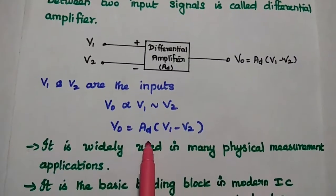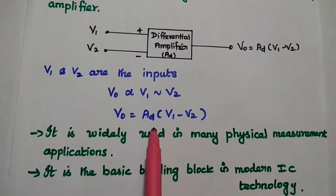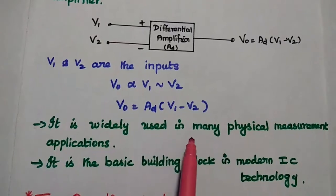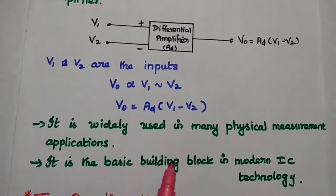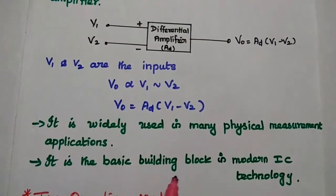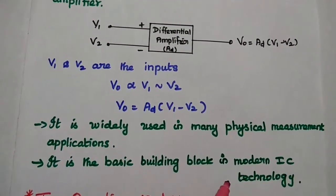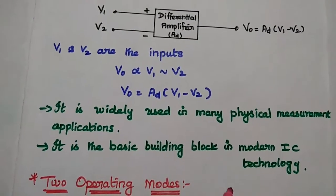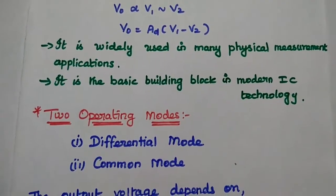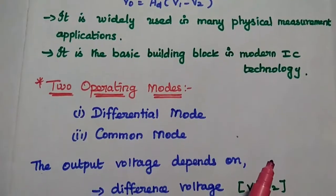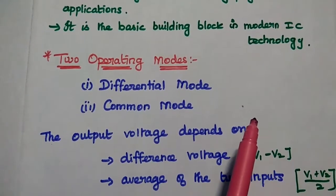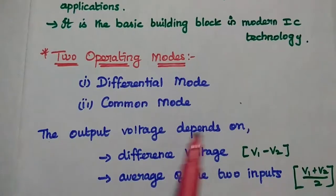This differential amplifier is widely used in many physical measurement applications. It can also be used as a basic building block in modern IC technology. This differential amplifier is widely used in IC amplifier circuits. There are two operating modes available in this differential amplifier: differential mode and common mode.